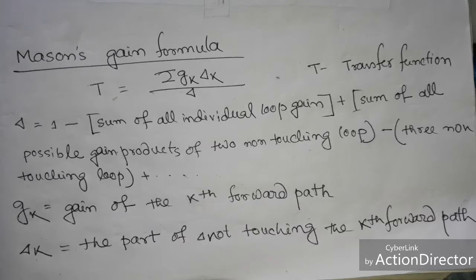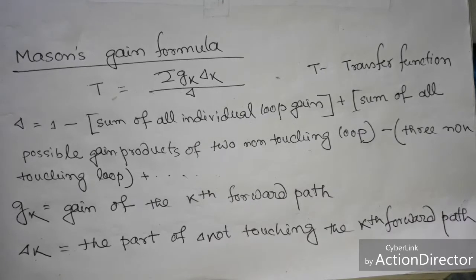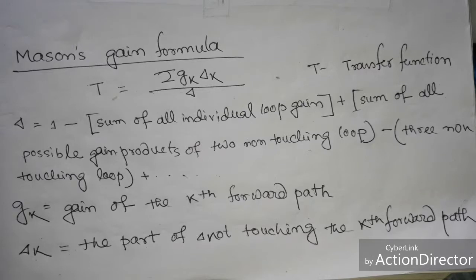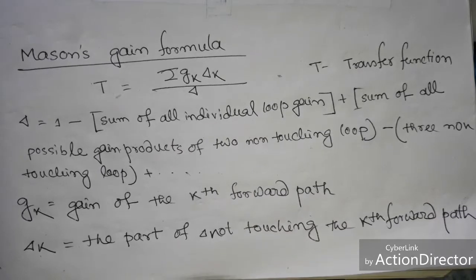G_k is the gain of the k-th forward path and Δ_k is the part of Δ not touching the k-th forward path. We will now consider two examples and try to solve them using Mason's Gain Formula to find the transfer function.